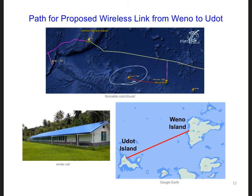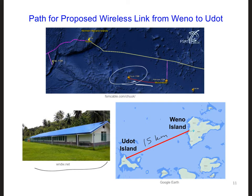Wayno Island, which is the Chuuk state of FSM, is one of the two islands in FSM connected to a submarine fiber optic cable. UDOT Island and UDOT elementary school is about 15 kilometers away from Wayno Island. This location on Wayno Island has access to the internet, and here is where the UDOT school is on UDOT.